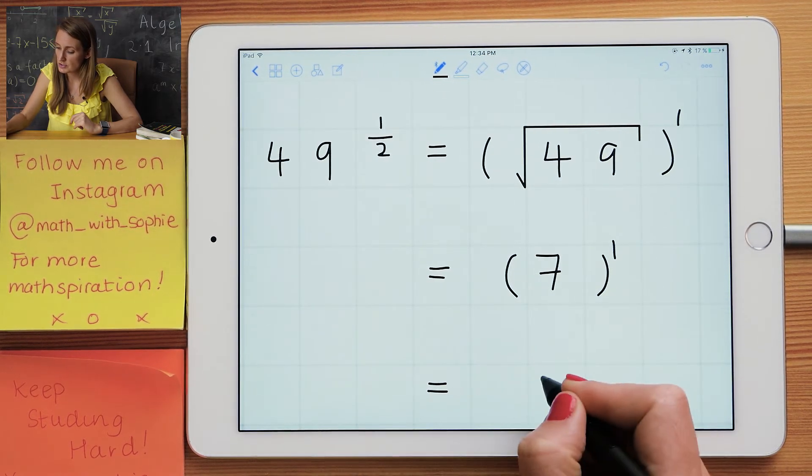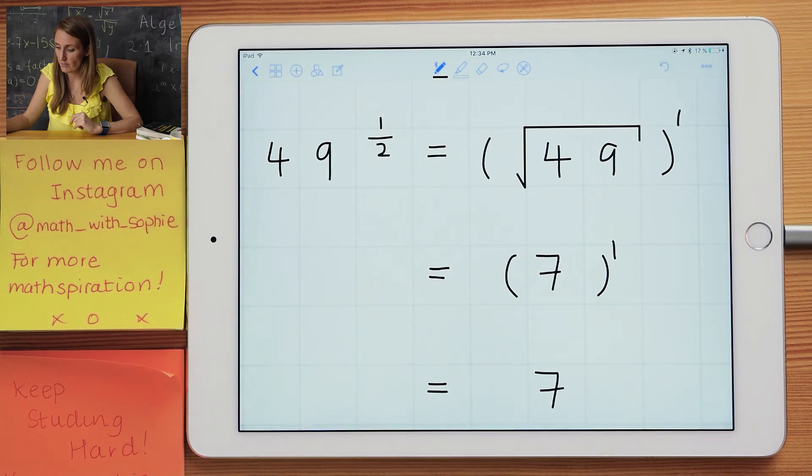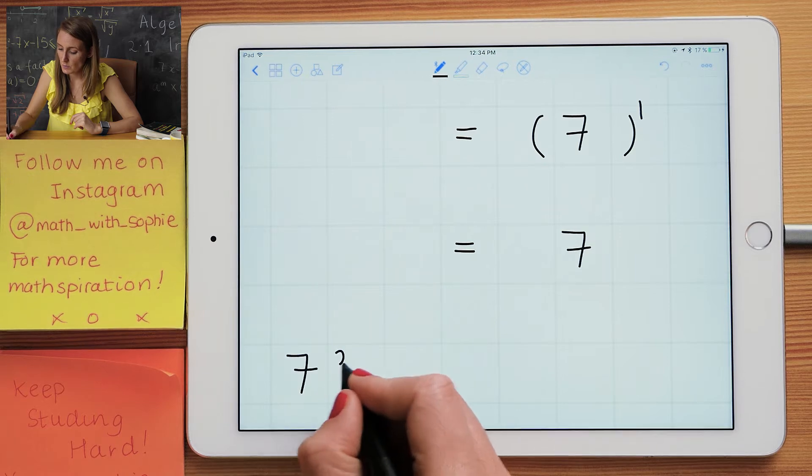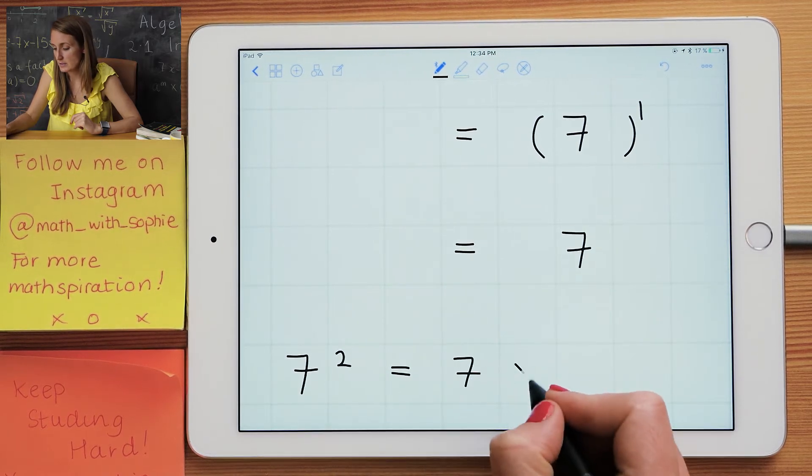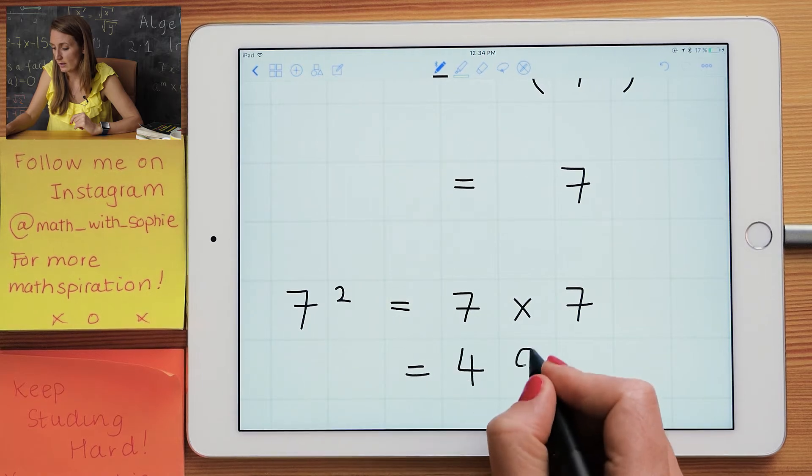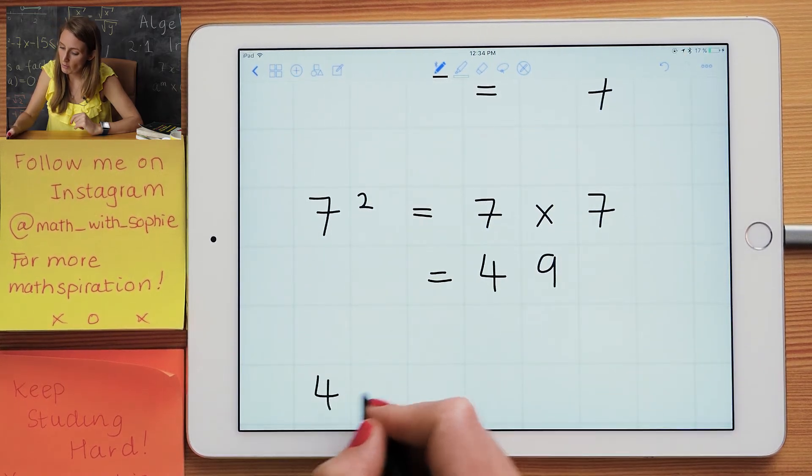So a couple things to bear in mind: 7 squared is equal to 7 times 7, which is equal to 49. That means that the square root of 49 is equal to 7.